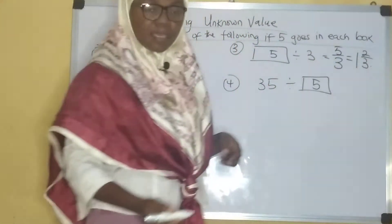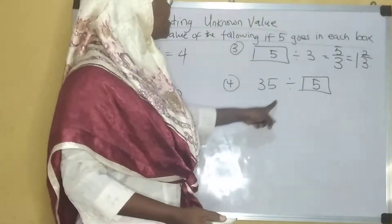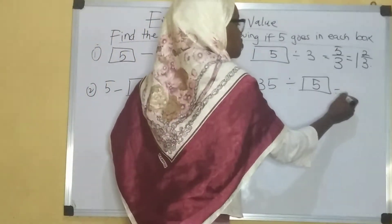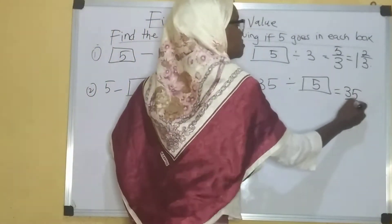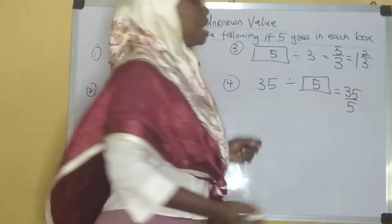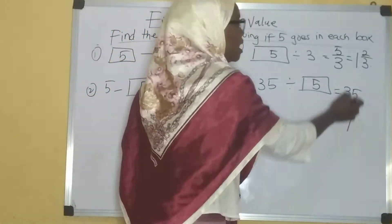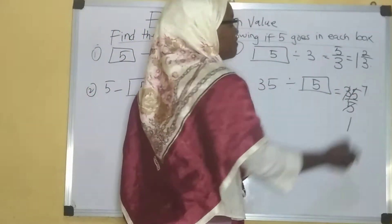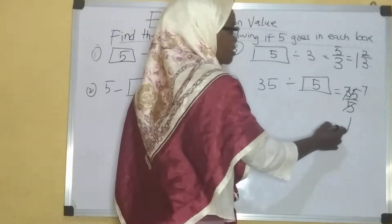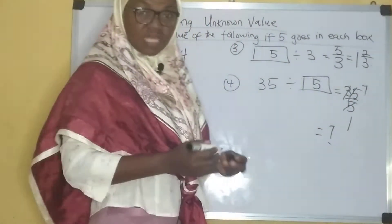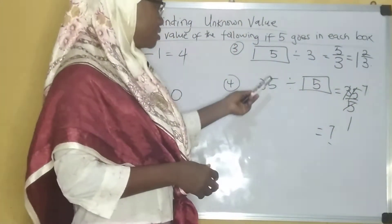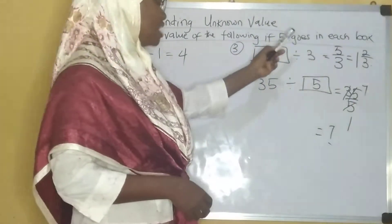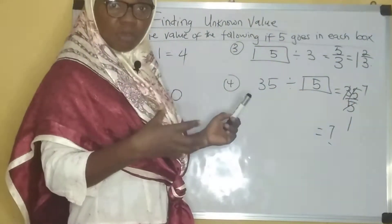Here I have 35 divided by five. 35 divided by five is what? How many fives can I get in 35? Seven. So I have seven divided by one and that is seven. We can see the corresponding values that we get when we put five in each of the boxes.